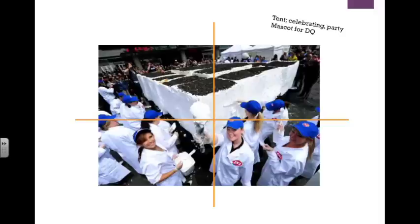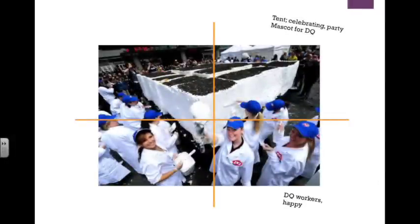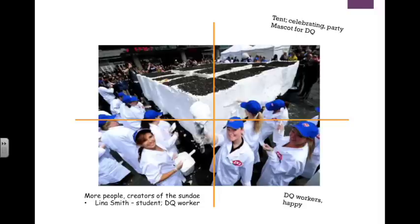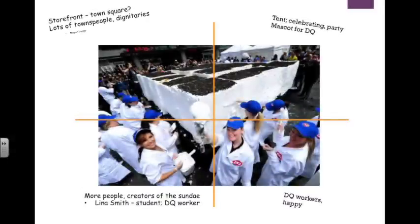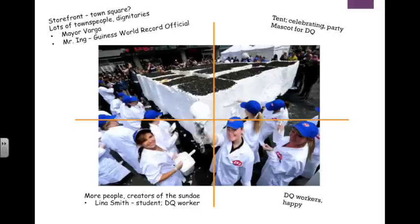In the top right-hand corner we have a tent and a Dairy Queen mascot, and the huge cake that you can see. In the bottom right-hand we see some Dairy Queen workers in their uniforms who seem pretty happy. In the bottom left-hand corner we're going to name the girl there — she can be a witness. Her name could be Lena Smith and she's a participant who helped create the cake. The top left-hand corner shows a storefront. Maybe this is in the town square — you've got some dignitaries and people who are watching. Let's give our mayor a name: Mayor Varga. And then the Guinness World Record officiator we'll call Mr. Ng.